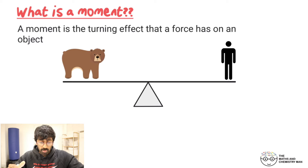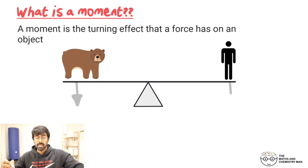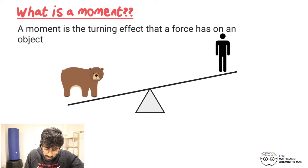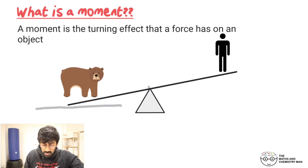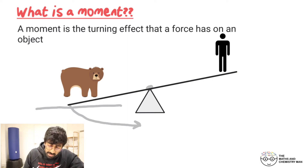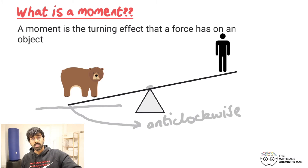Now let's look at a different scenario where you've got the man and a bear. The bear is much heavier, so the bear is going to be pushing down with a much greater force on his side. The bear will tilt the seesaw downwards, and if there was no ground, the seesaw would spin in the anti-clockwise direction. So the bear has caused it to tip anti-clockwise, whereas the man has caused it to tip clockwise.